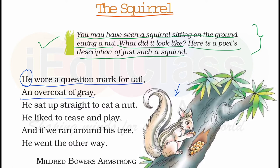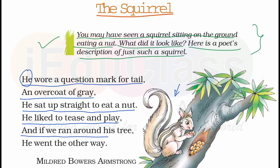The squirrel also wore an overcoat of grey — meaning he has a grey-colored coat on his body. He sat up straight to eat a nut. He likes to tease and play, and if we ran around his tree, he went the other way.